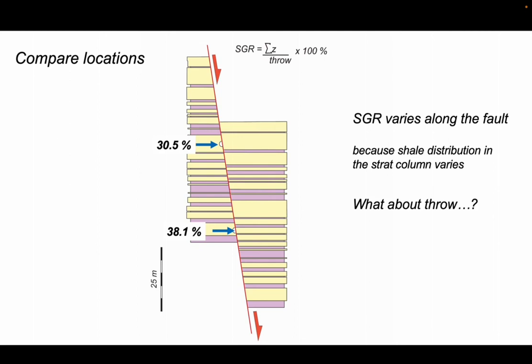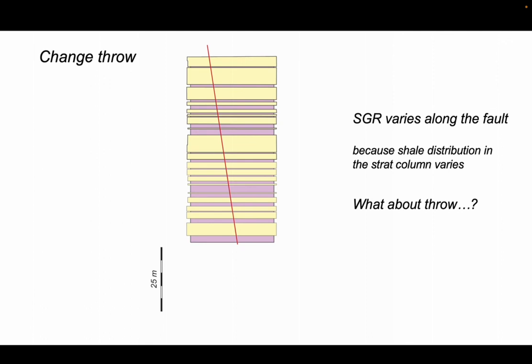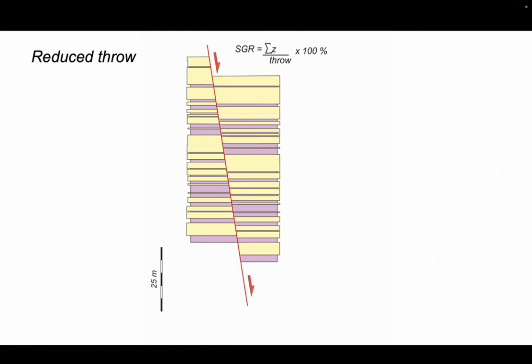But what about throw? Let's go back and refault this succession, but this time with a smaller throw. We'll do our calculation for one point on the fault. We've fixed its location, measure the throw, and it's now just 7.7 meters.